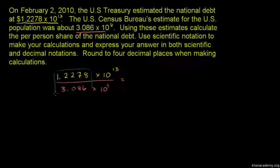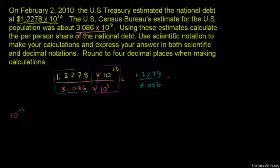So we have 1.2278 times 10 to the 13 divided by 3.086 times 10 to the 8. When we divide, we subtract the exponents: 13 minus 8 equals 10 to the power 5.